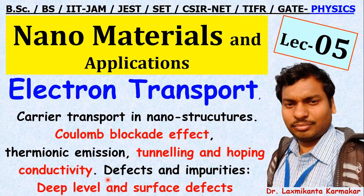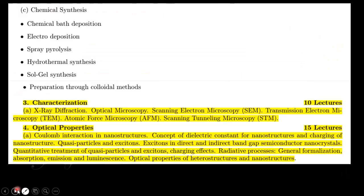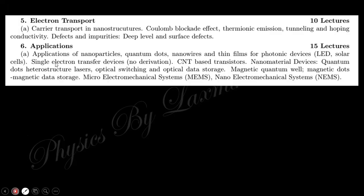We will also cover tunneling and hopping conductivity, and defects and impurities — that is, deep level and surface defects. As you can see in the syllabus: section one covers nanoscale systems, two covers synthesis, three covers characterization, four covers optical properties, and this is section five on electron transport. In upcoming sessions we will cover the application part.